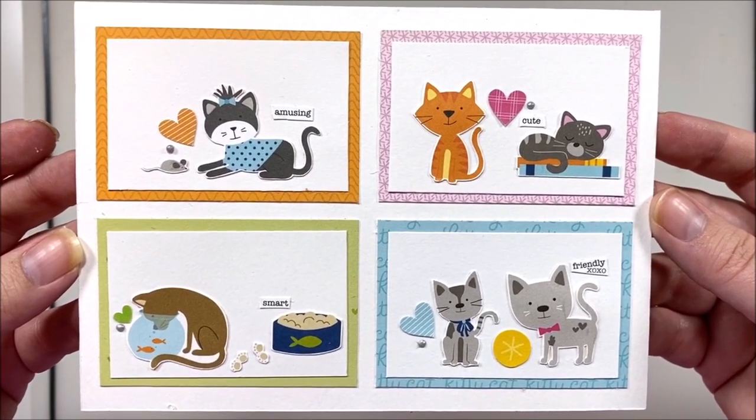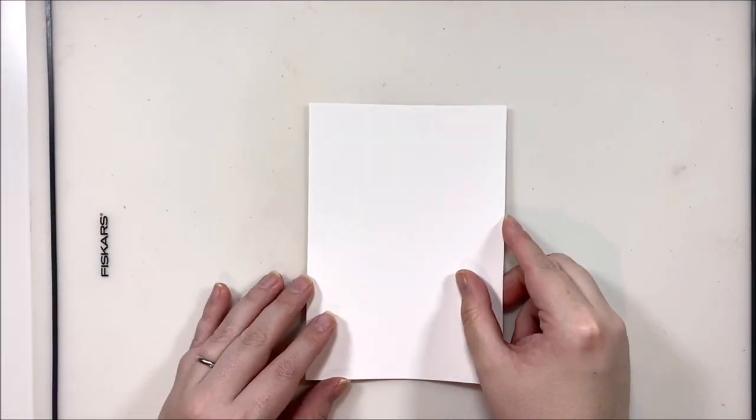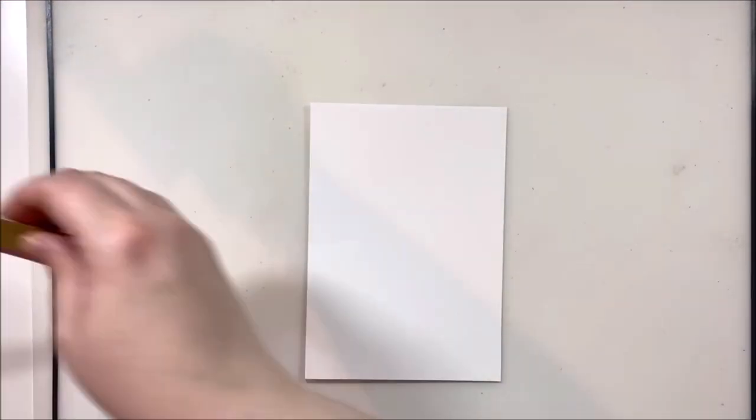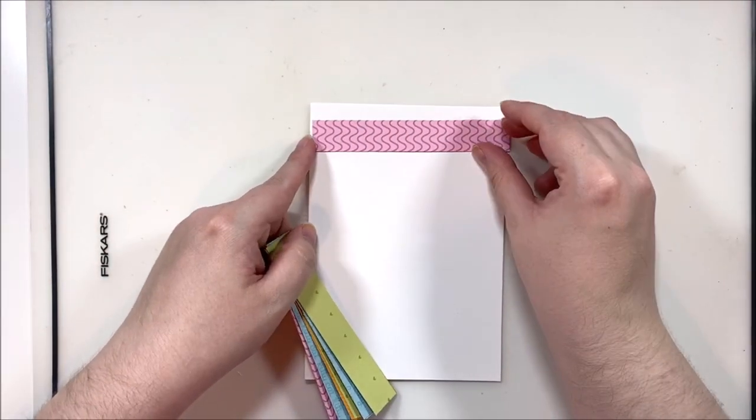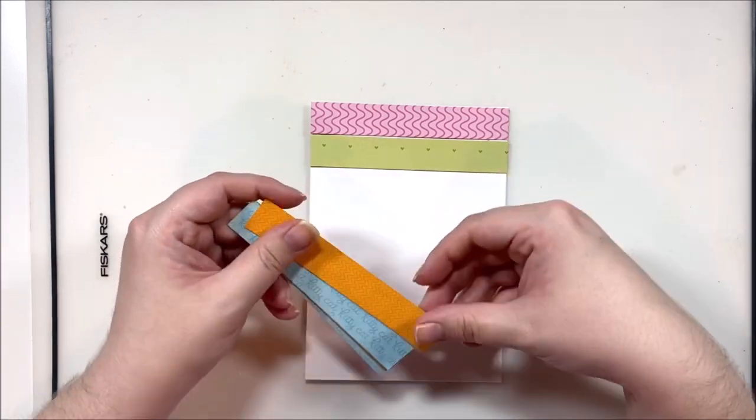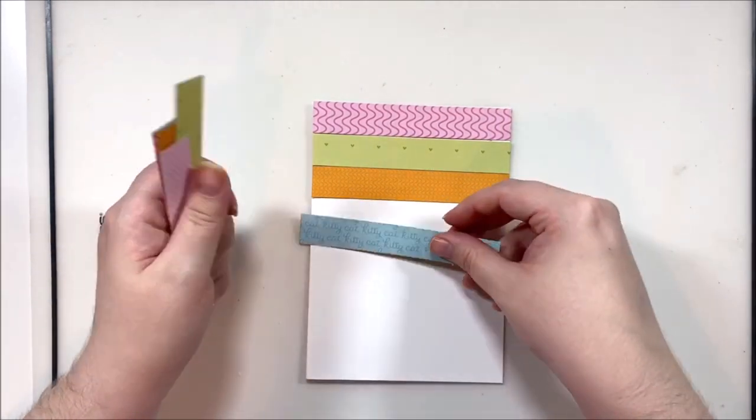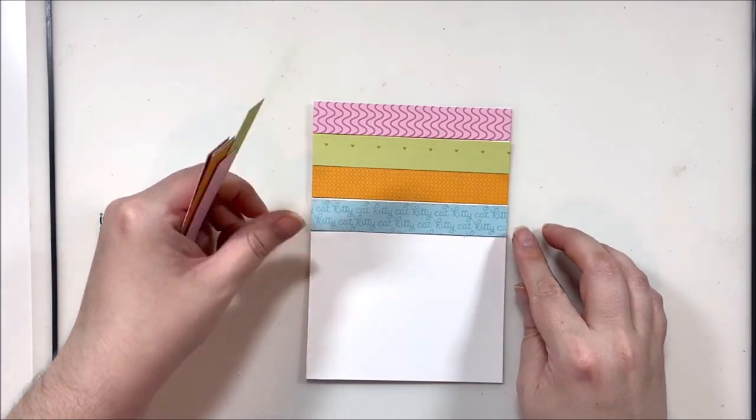These bright beautiful colors of course give me all the things. On this next one, this is a great idea for using scraps. I have a whole bunch of scraps from the 6x6 paper pad and I decided to just layer them up in a pattern down the back of the card base.